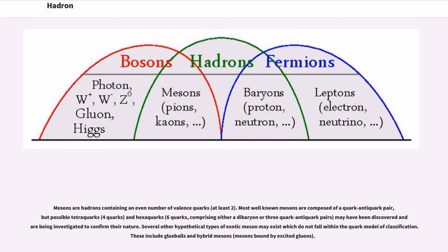Mesons are hadrons containing an even number of valence quarks (at least two). Most well-known mesons are composed of a quark-antiquark pair, but possible tetraquarks (four quarks) and hexaquarks (six quarks), comprising either a dibaryon or three quark-antiquark pairs, may have been discovered or are being investigated.